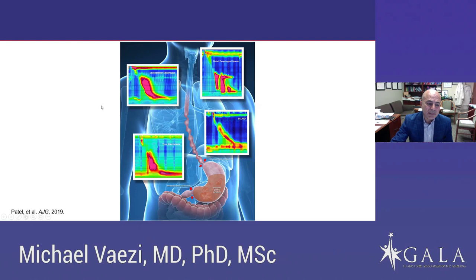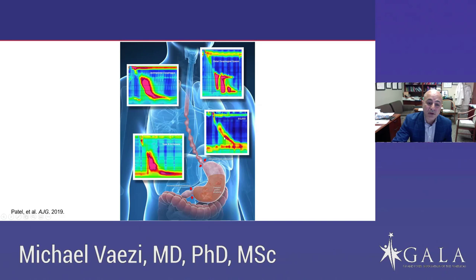This slide, taken from that article, shows how opioids impact esophageal motility. In a patient that might present with dysphagia, what we see is perhaps jackhammer esophagus — a hypertonic contraction. Patients might have distal esophageal spasm, or be diagnosed with type 3 achalasia, or this condition called EGJ outflow obstruction, where essentially the GE junction is not relaxing although there is peristalsis. We do see this in patients on chronic opioid use.